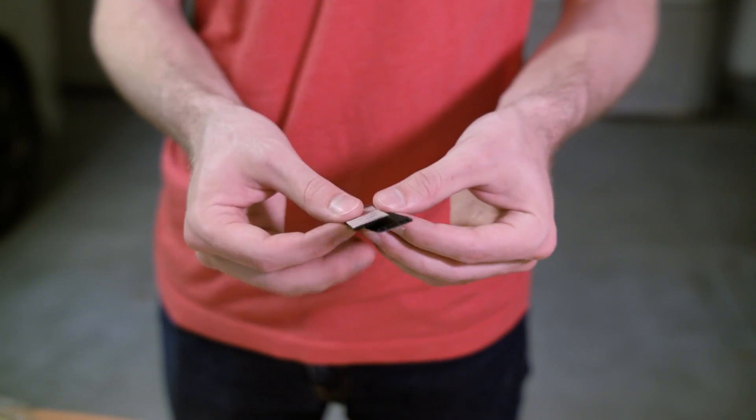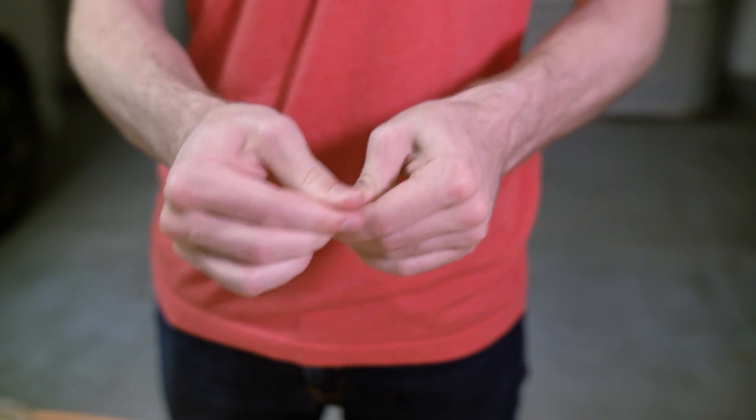We're going to use these picture hanging wall strips to mount the electronic components in the base. We like these because they're very strong, but they're not permanent so we can move things around if we want to.